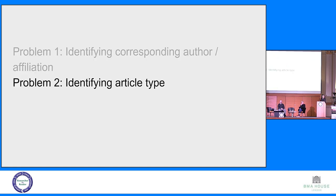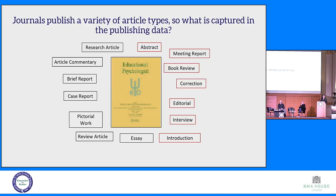The second challenge we encountered is figuring out the article type — identifying what type of article it is. Here's an example from a Taylor and Francis journal showing all the different article types that could be assigned. Some of those clearly are not going to be covered by a transformative agreement — you don't necessarily make an editorial open access, and you certainly don't charge an APC for it.